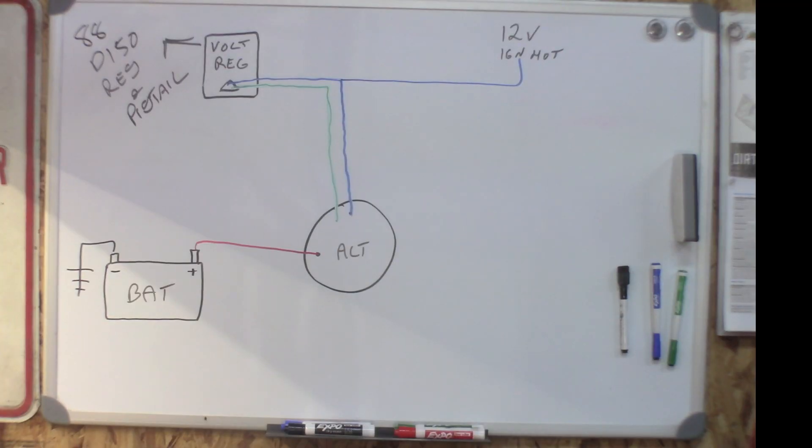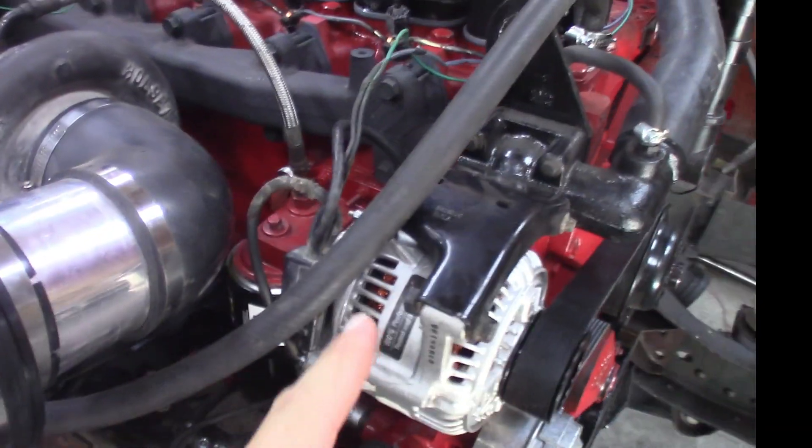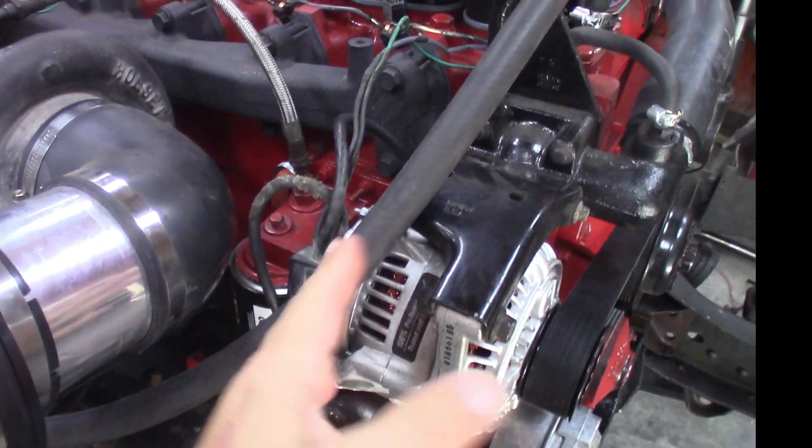Now that you got the wiring diagram, let's show you something other than my third grade drawing. Let's show what everything actually looks like on the truck. Here you can see we have the second gen Dodge alternator in the factory brackets, no big deal there.